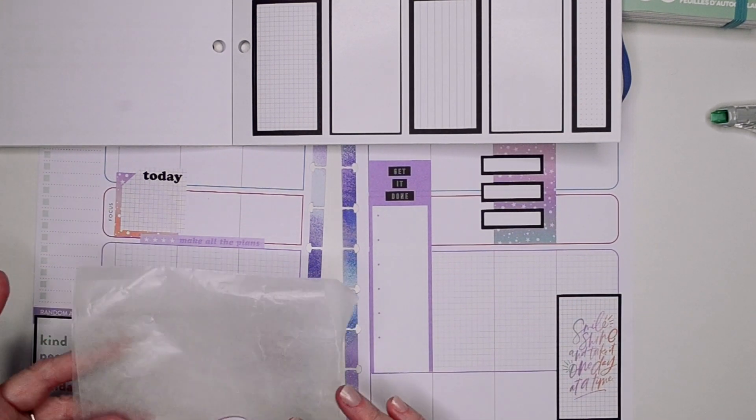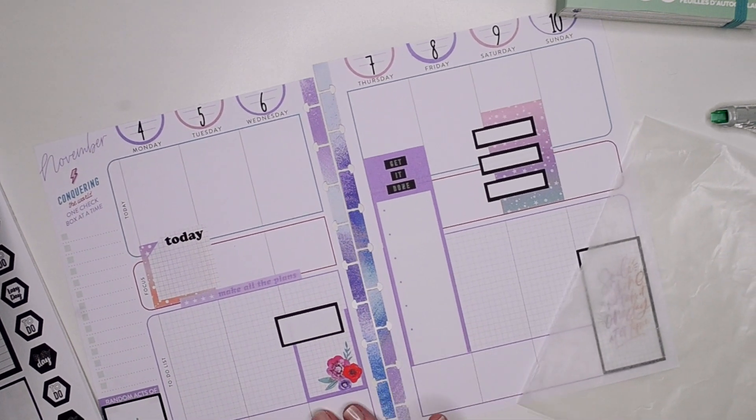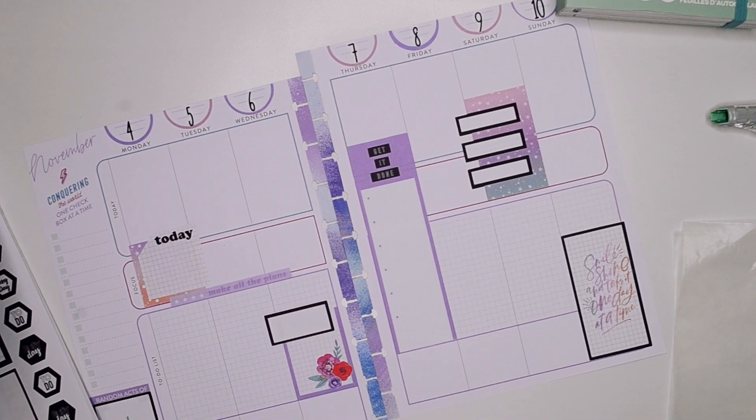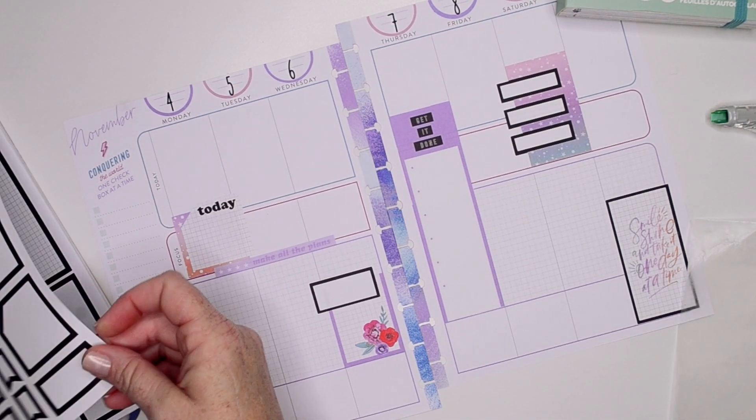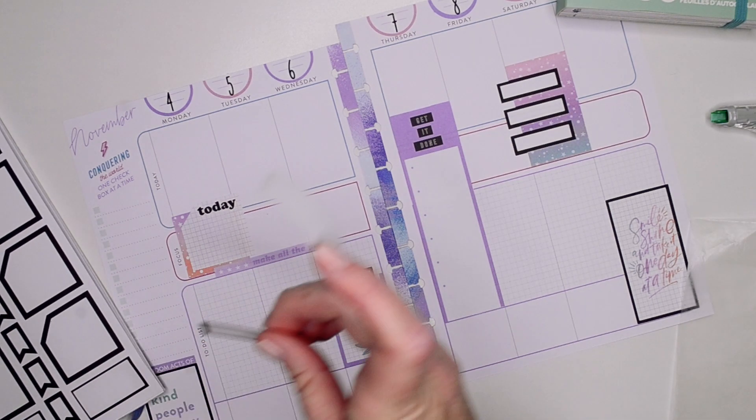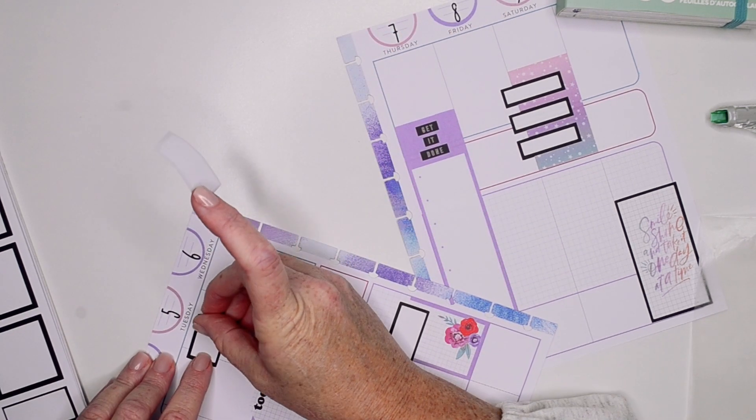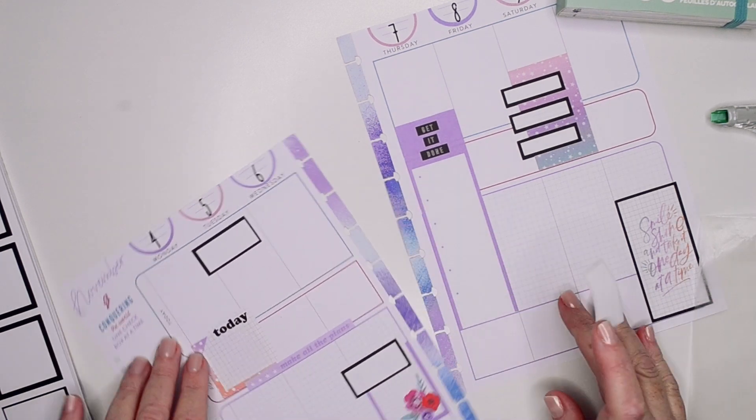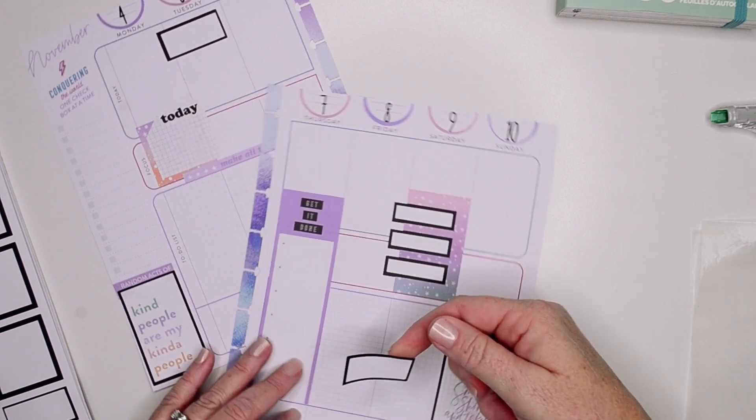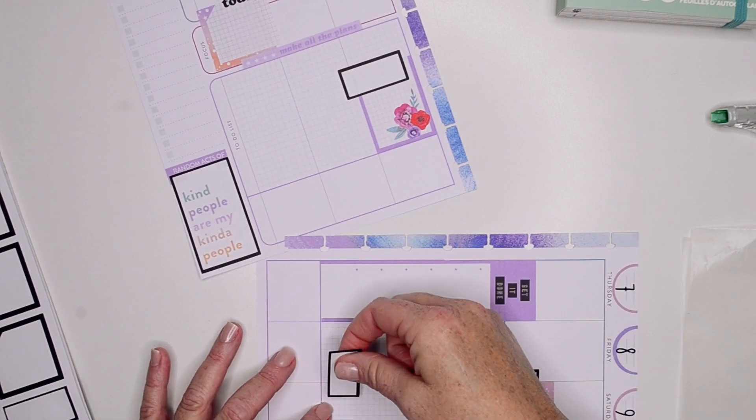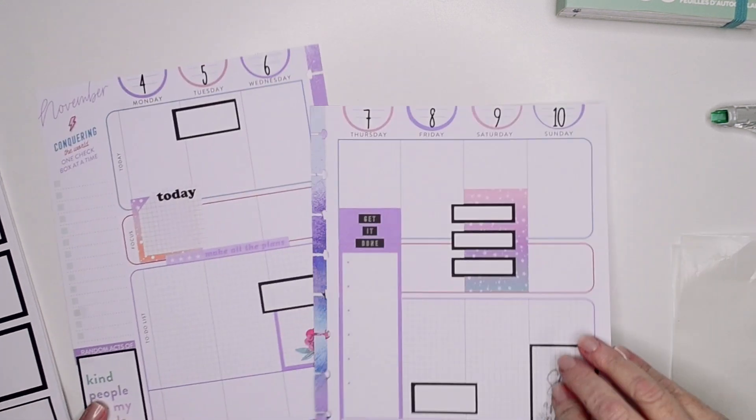So those are all the stickers that I have pre-chosen. What else do I want to do? I think I'm going to come in with a couple black colorful boxes and then finish up with some florals. I'm just going to stagger it over here because I don't like boxes inside of boxes. For some reason I don't like that.